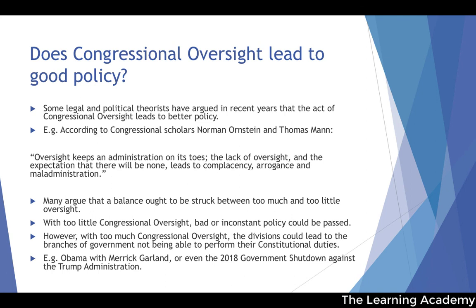So there is a balance to be struck: just enough oversight that inconsistent or flawed policy is avoided, but not so much that the constitutional roles of each branch break down. In the next and final lesson, we'll talk about the relationship, similarities, and differences between the UK parliamentary system and the US congressional system for our comparative politics unit, before moving on to a new chapter looking at the Executive Branch.